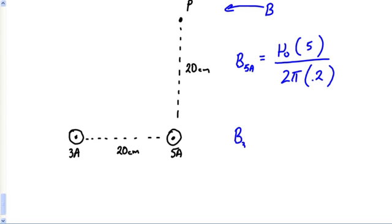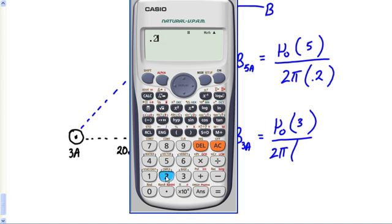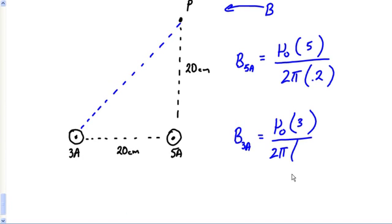Then I want to find the B for this 3 amp conductor: μ₀(3) over 2π. In this case, I need to figure out a little bit of a resultant here. I need to figure out this triangle. Give me back that calculator - 0.2 square plus 0.2 square, take the square root of that, 0.28. So this is 0.28, 28 centimeters.